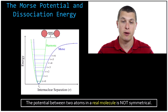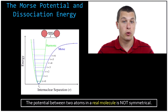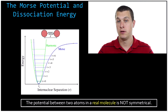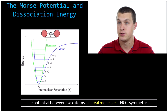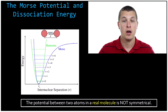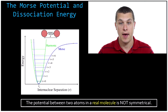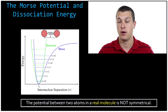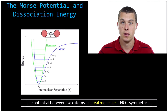Welcome to Real Chemistry. Today we're going to be talking about the Morse potential. The Morse potential really builds off of the harmonic oscillator, so if you're not familiar with the harmonic oscillator, go ahead and check out my video on that and then come back here. I'll link to that in the show description.